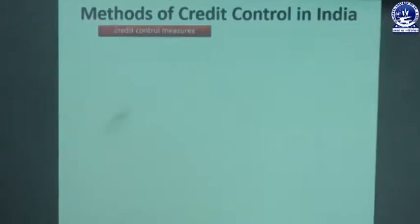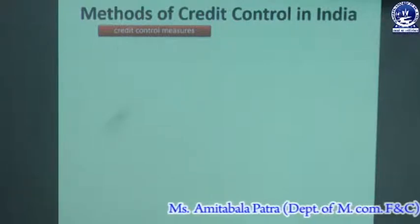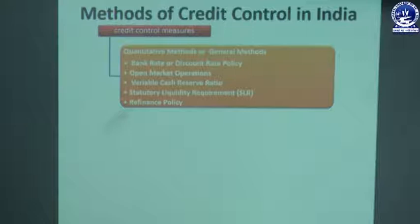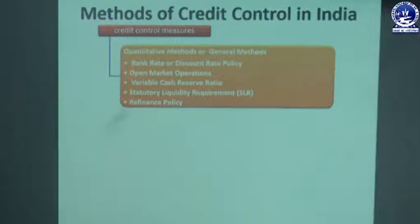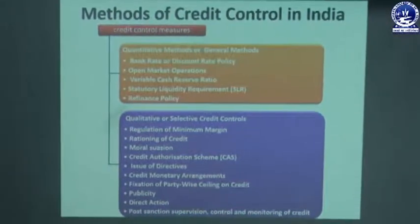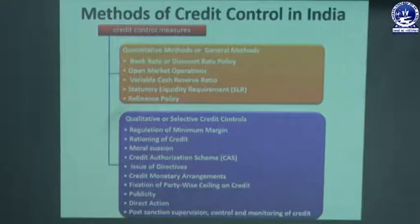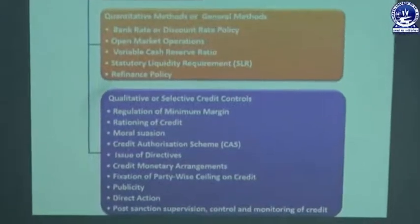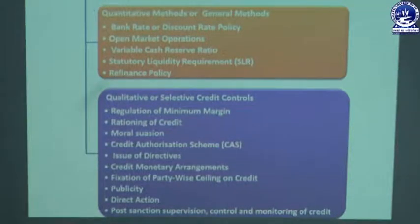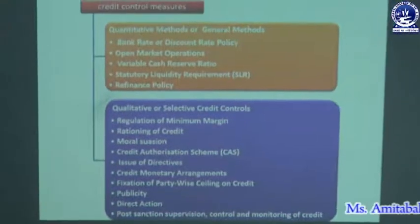The methods of credit control in India are broadly categorized into two categories. The first is the quantitative or general method, which includes bank rate or discount rate policy, open market operations, variable cash reserve ratio, statutory liquidity requirement or SLR, and refinance policy. The other category is the qualitative or selective credit controls, which includes regulation of minimum margin, rationing of credit, moral suasion, credit authorization scheme, issue of directives, credit monetary arrangements, fixation of party-wise ceiling on credit, publicity, direct action, and post-sanction supervision, control and monitoring of credit.